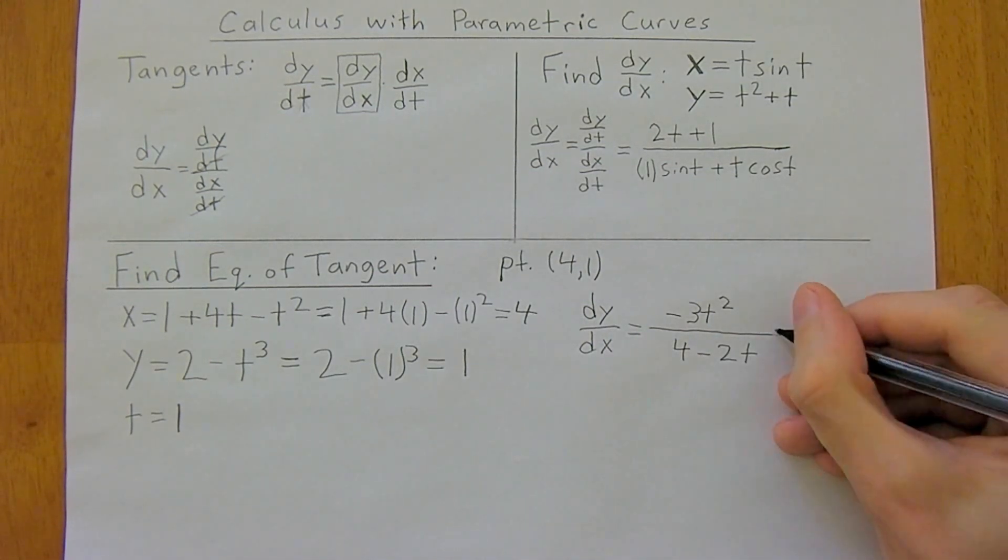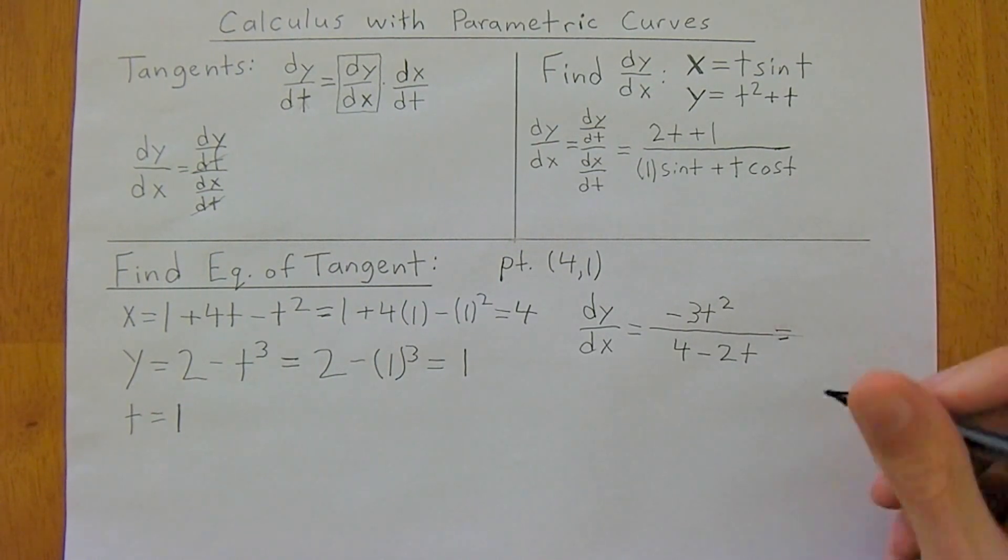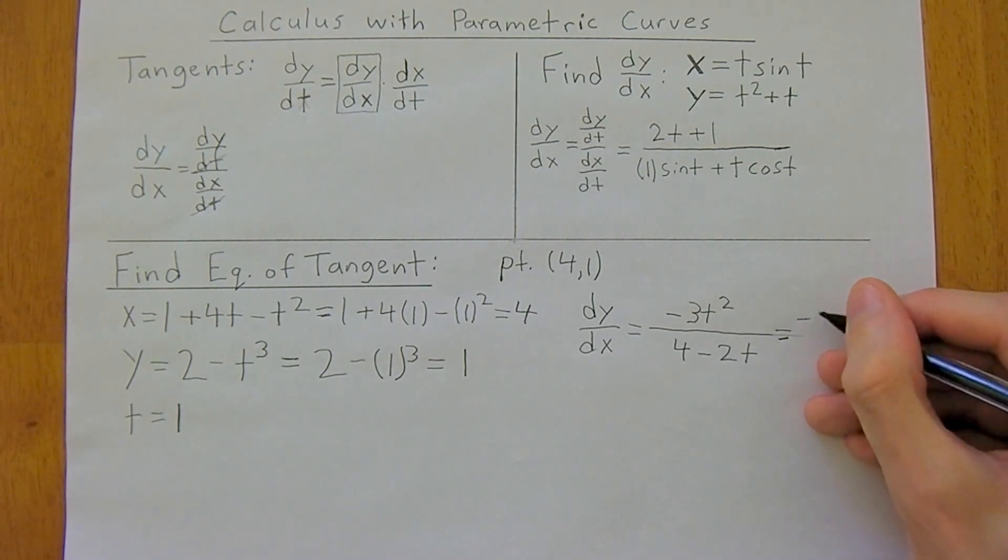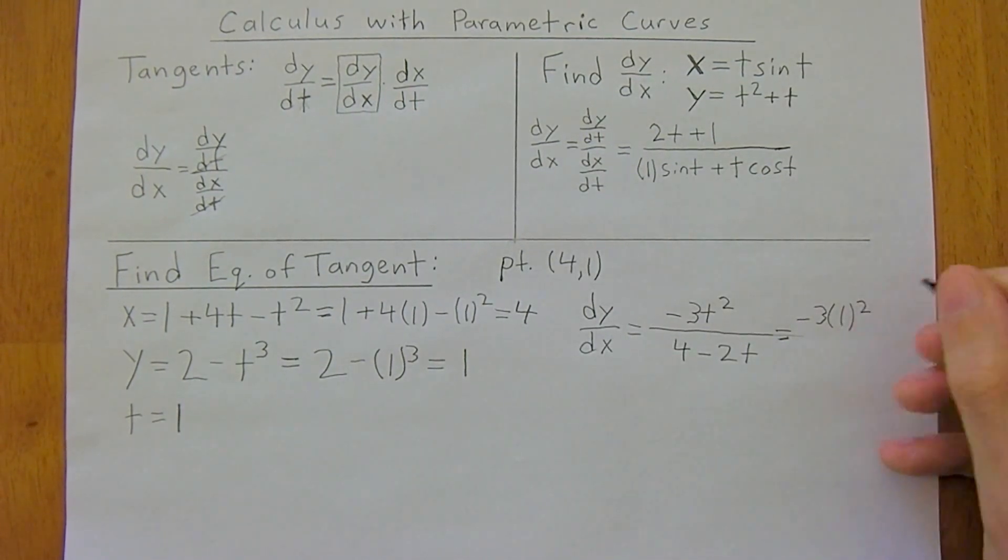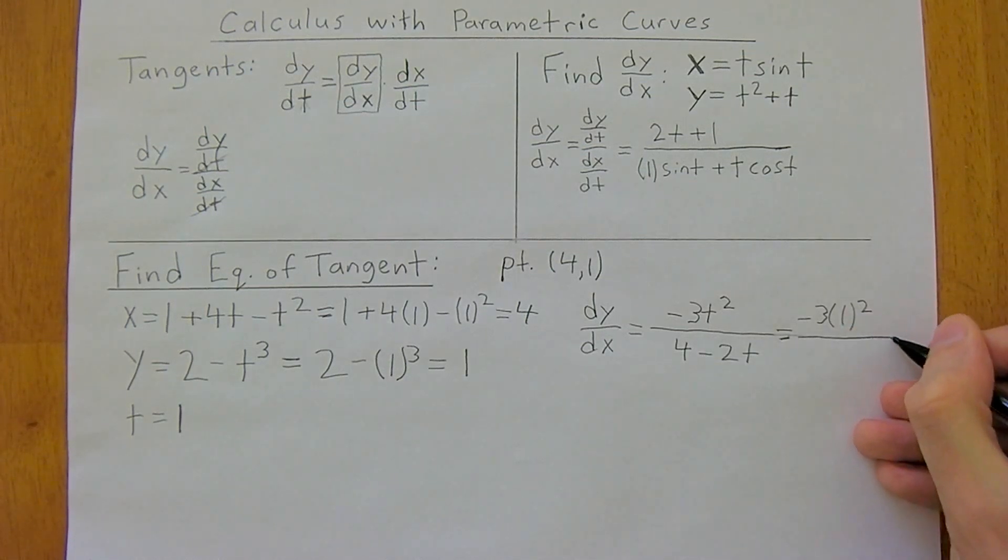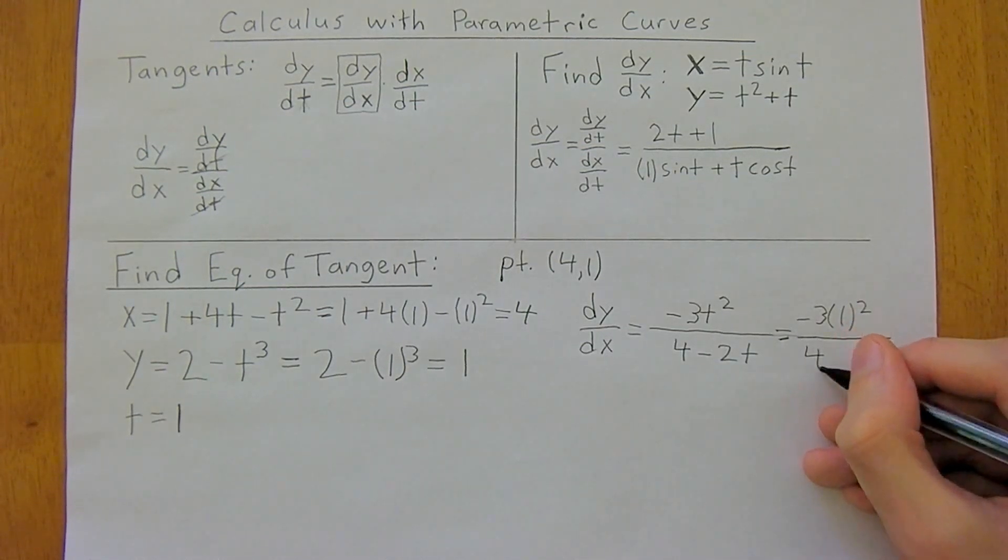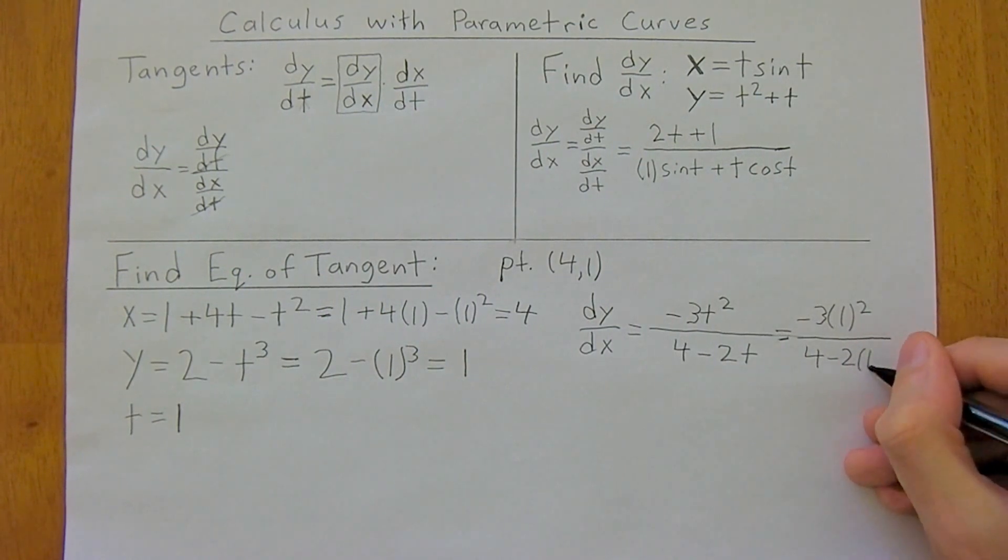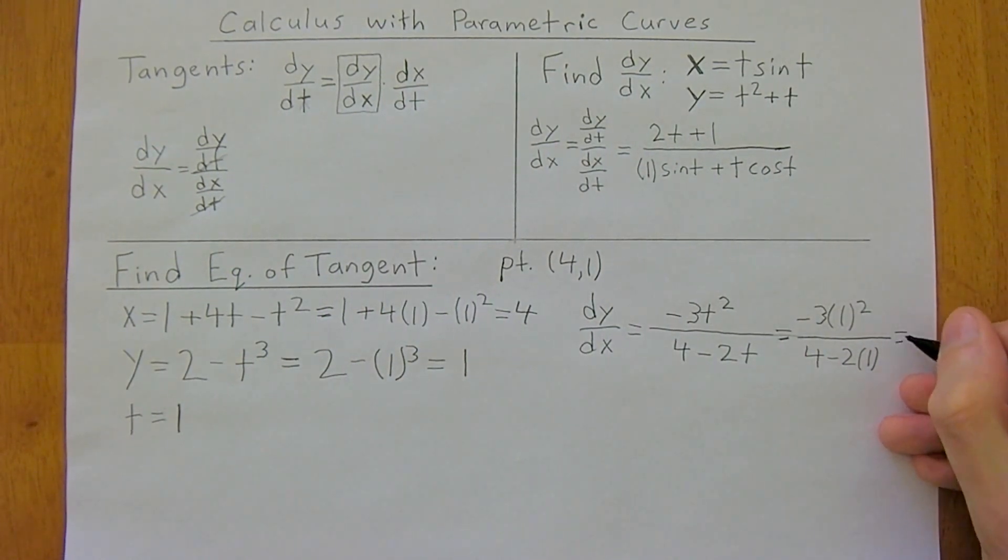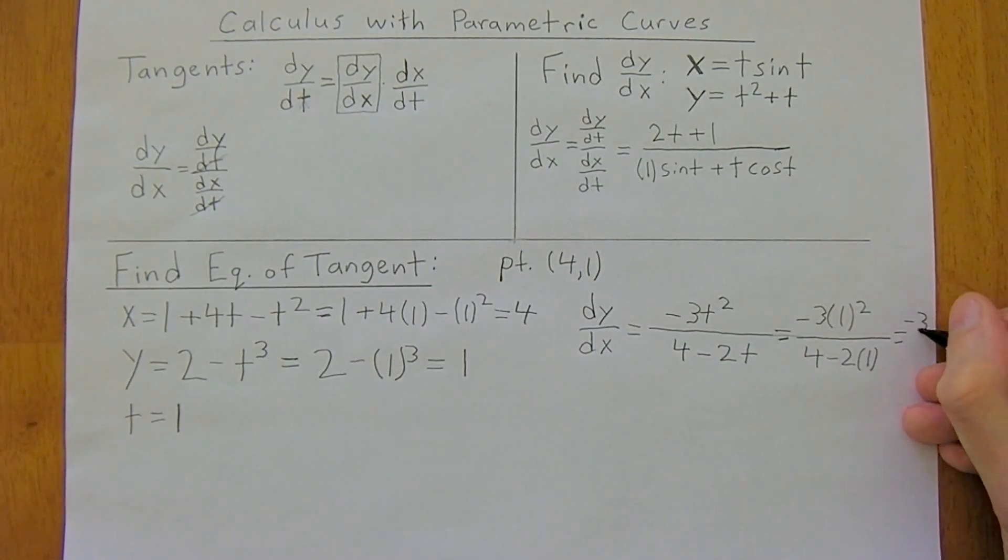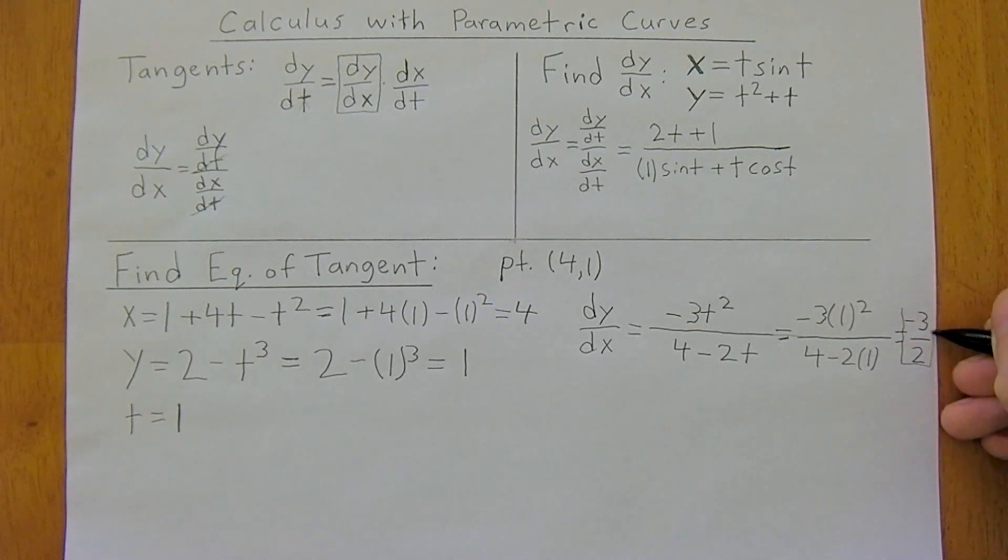So now all that's left is we just need to plug in t equals 1 to our derivative. That will give us negative 3 times 1 squared divided by 4 minus 2 times 1. And this is going to be equal to negative 3 divided by 4 minus 2. So negative 3 divided by 2. So this is our slope now, negative 3 divided by 2.